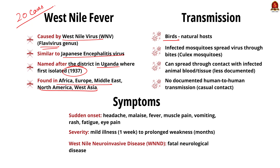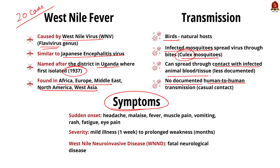Talking about the transmission of this virus: birds are the natural host or natural carrier of the West Nile virus. Mosquitoes become infected when they feed on infected birds, and then the infected mosquitoes transmit the virus to humans through bites. Transmission to human beings is mainly by the Culex mosquito. The disease can also spread through contact with other infected animals, their blood or tissues, but there is no human-to-human transmission documented.